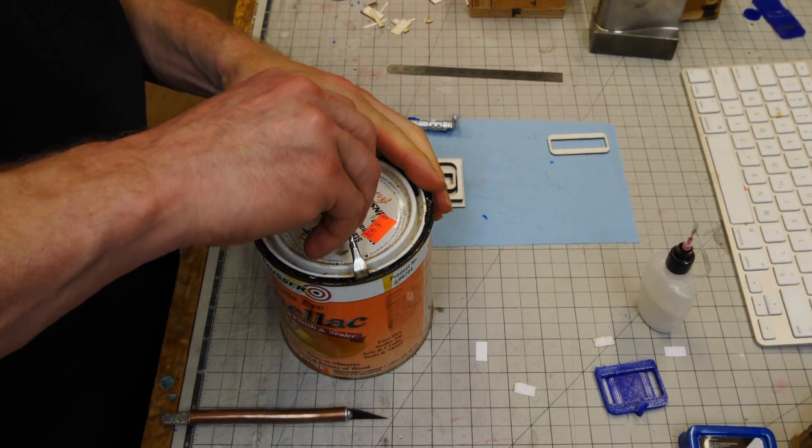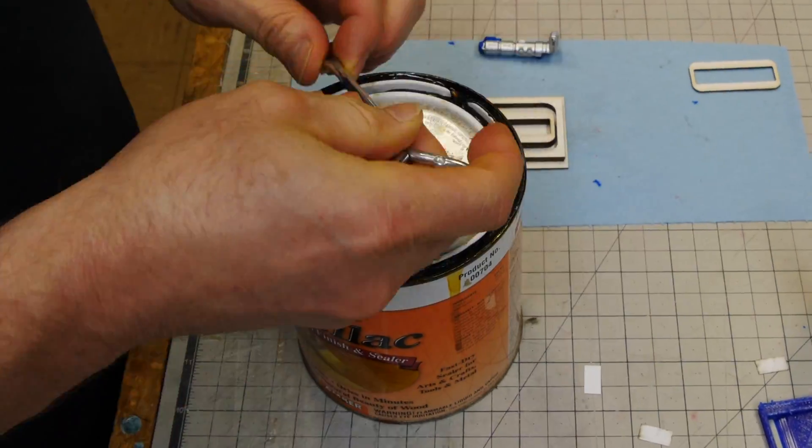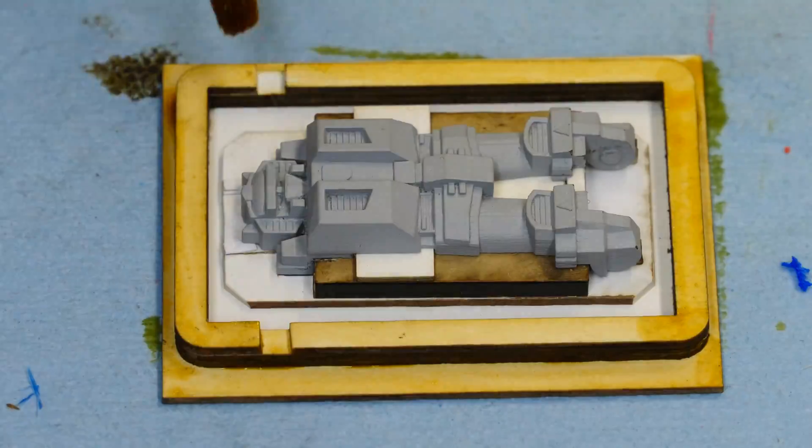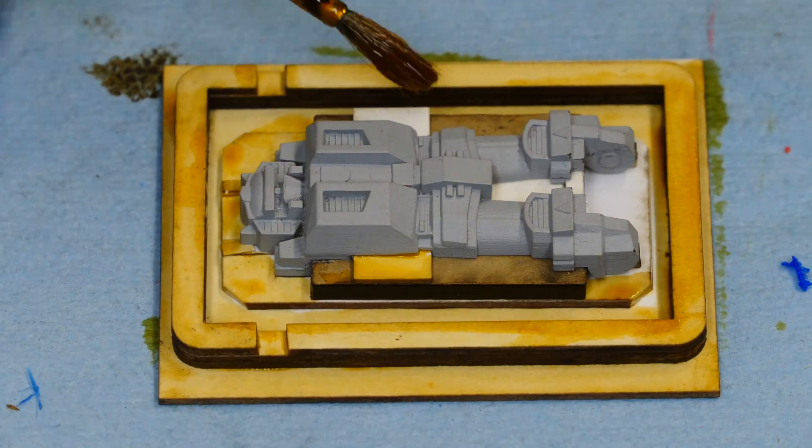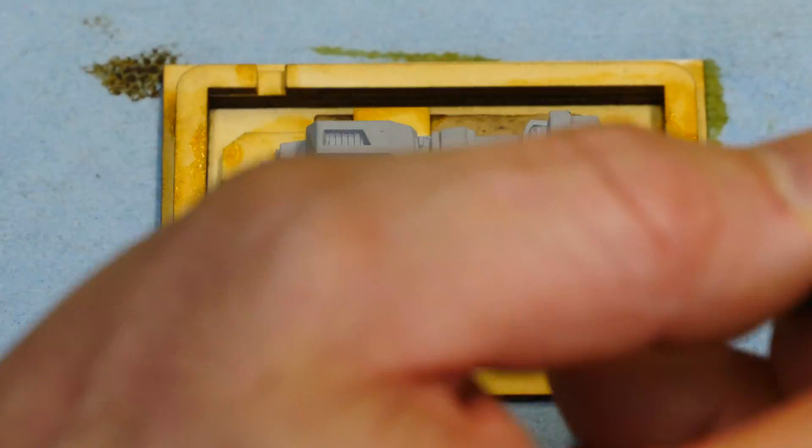And we're going to seal up what we've done in cardboard now using some shellac, and this is just to prevent the silicone from seeping into the cardboard and getting a nice surface.